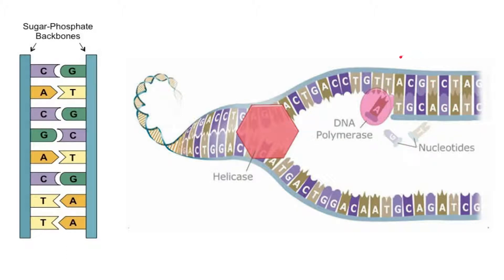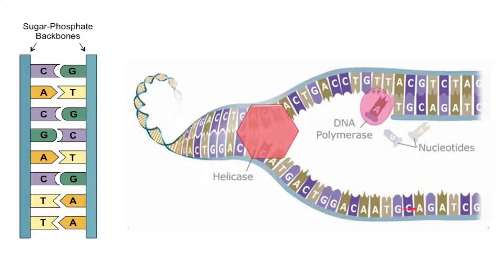As DNA polymerase moves along, new phosphodiester bonds are formed and a new strand is built. You can see that this part of the new molecule now looks very similar to the original, with two strands running anti-parallel with complementary base pairing. The same process occurs on the other strand simultaneously with a different DNA polymerase, producing a new strand with the exact same base sequence — for example, T-A-G-A-C-G-T.